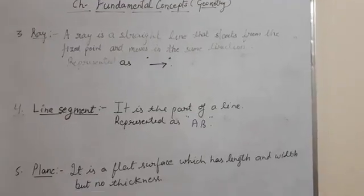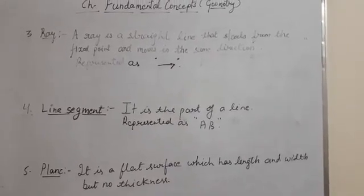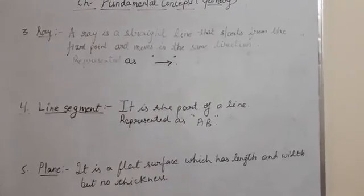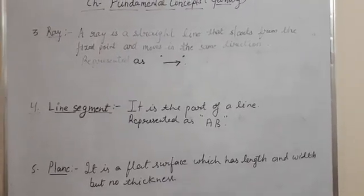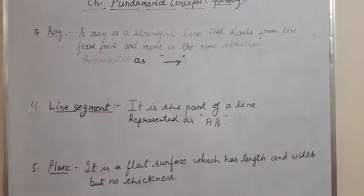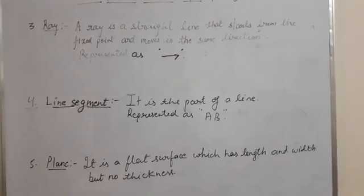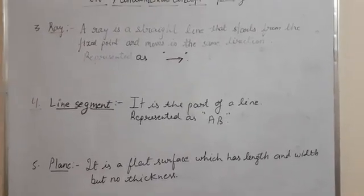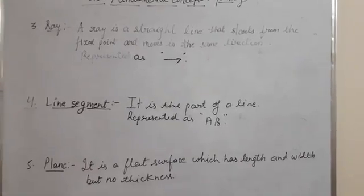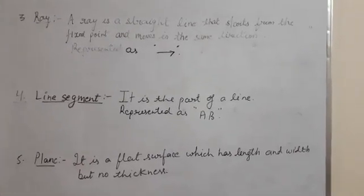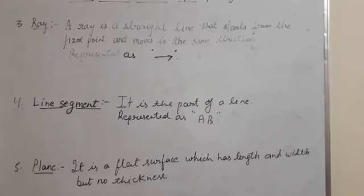The third concept is a ray. A ray is a straight line that starts from a fixed point and moves in the same direction. It has a source point from where it begins and continues to move in the other direction. That is, it has a starting point but no ending point.